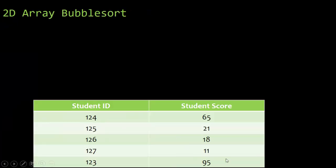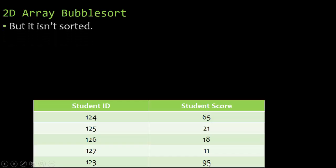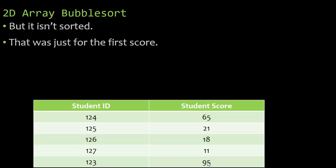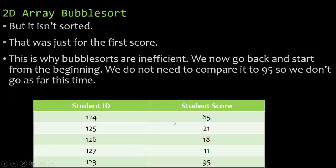So for 123 and 95 — because you may be saying it isn't sorted, that didn't work — well, that was just for the first pass. Now we have to go back and run it all the way through starting with 124 and 65. And this is why bubble sorts are inefficient. We now go back and start from the beginning. We don't need to compare it to 95, so we don't go as far this time. So we would update our max index. Let's go ahead and code this out so we can see this in action.